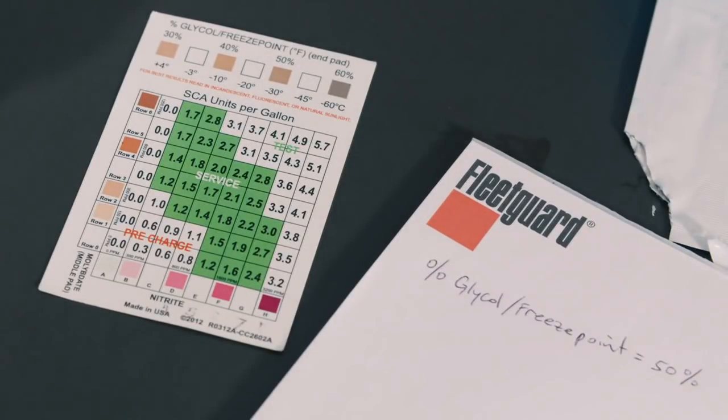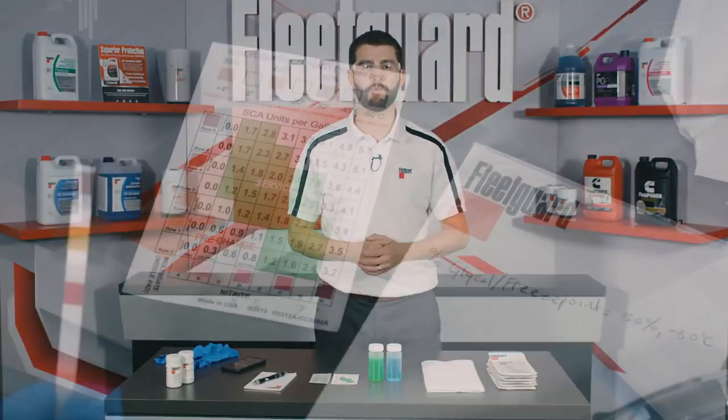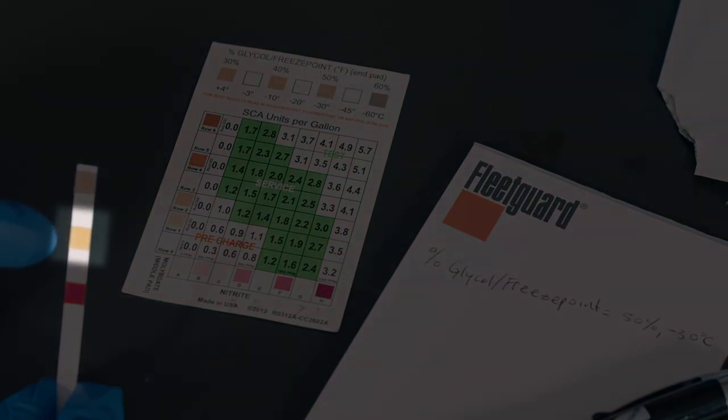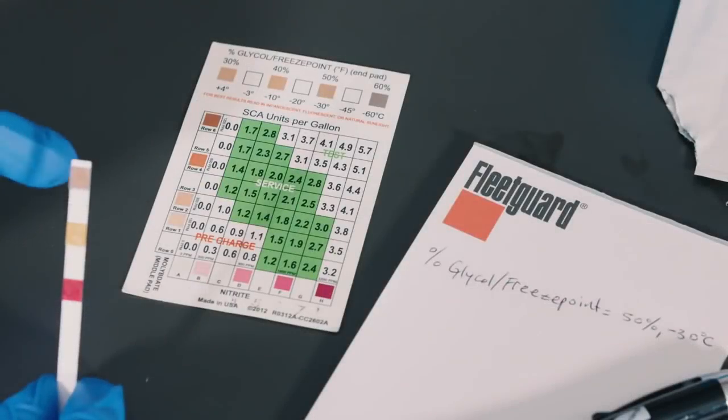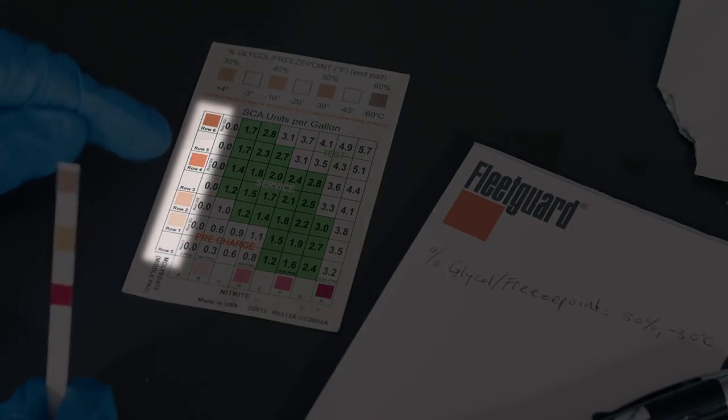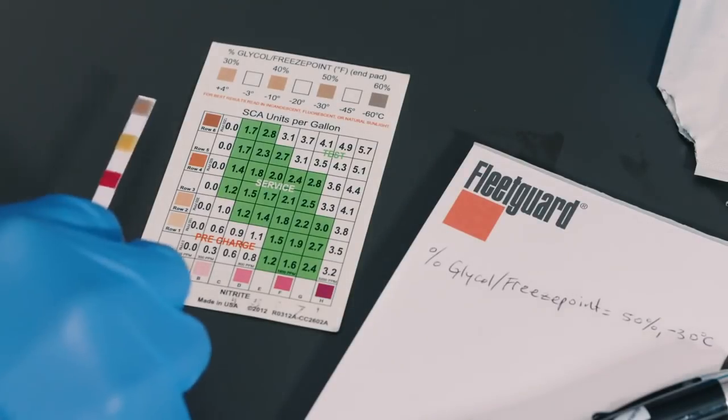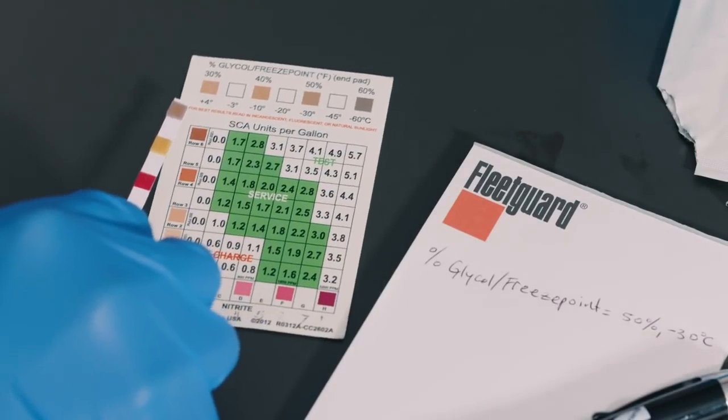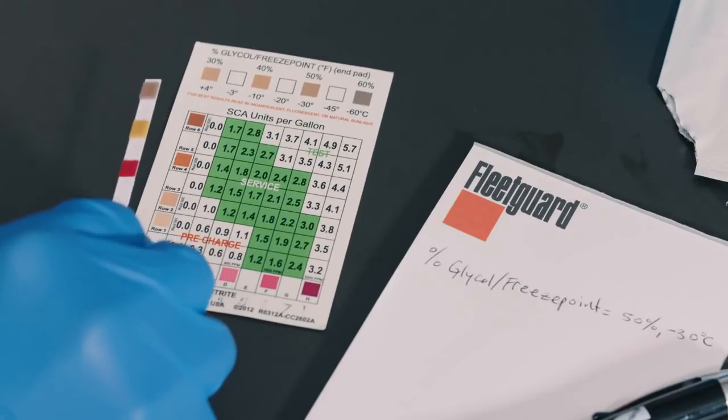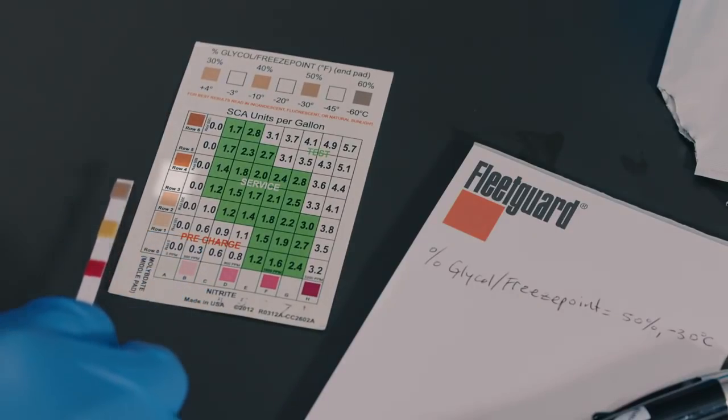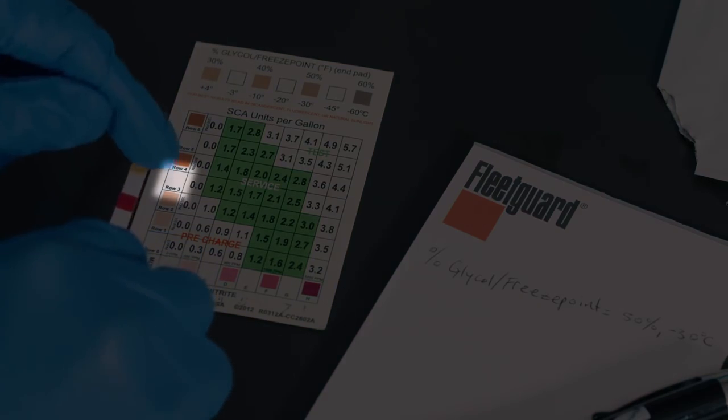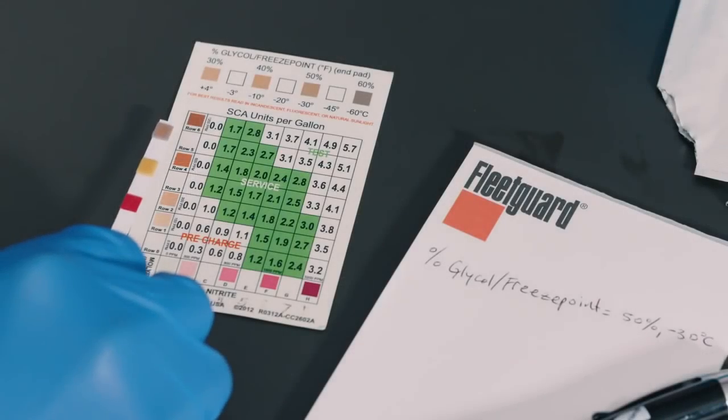Now let's compare the molybdate pad which is the middle pad on the test strip to the vertical axis on the chart that contains rows 0 through 6. Again find the color on the chart that best matches the test pad and record that result. For this example the best match is row 3. You may notice that row 3 is in between two of the color boxes which is perfectly okay. Also since not all coolants contain molybdate it's possible to have a result of 0 for this test.